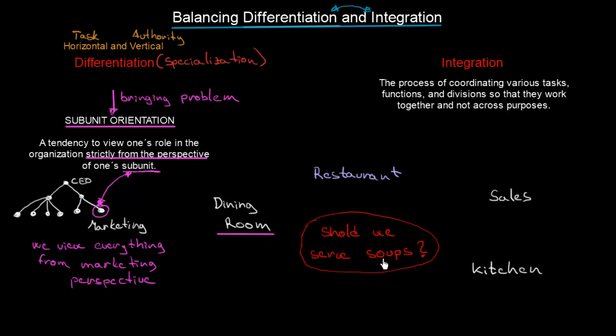And now imagine that subunit orientation really happened in all these three units. So subunit orientation happened here, happened here and here. So people who are within these three functions are going to look at that particular problem only from their perspective. Dining room personnel will look at the problem from their perspective. Then kitchen personnel and sales as well.